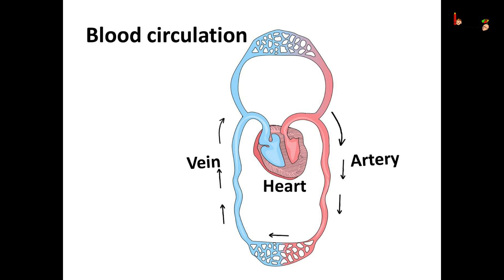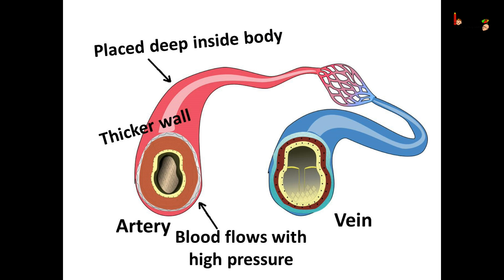The blood returns to the heart again. Vessels which carry blood to the heart are called veins. The veins have thin walls, and there are valves present in the veins which allow the blood to flow only towards the heart. Arteries have thicker walls than the veins and are deeply placed inside the skin. Veins are superficially placed — not so deep in the body. The blood flows through arteries under very high pressure caused by the pumping of the heart. As the blood travels more, this pressure gets reduced, so the pressure inside the vein is much lower.